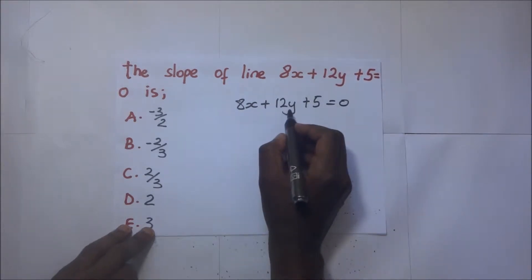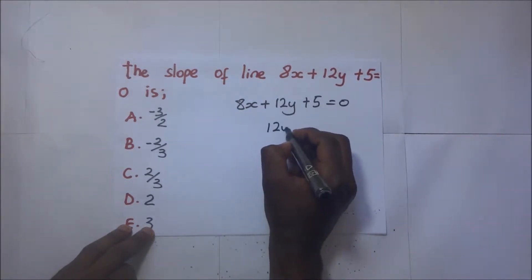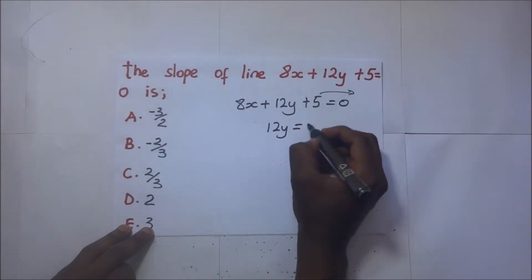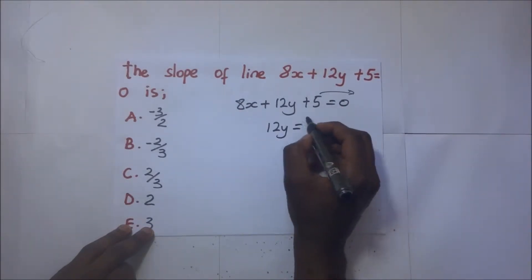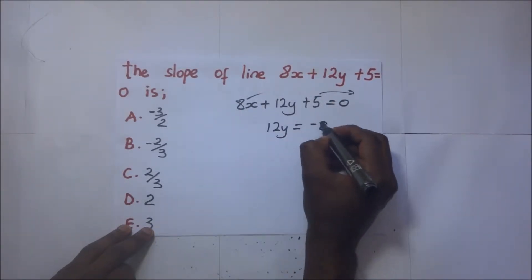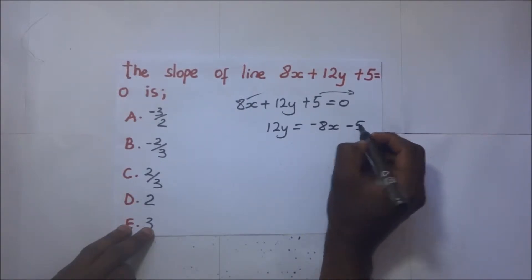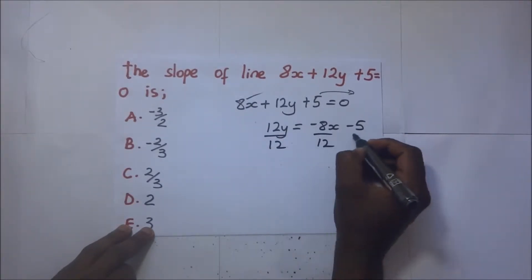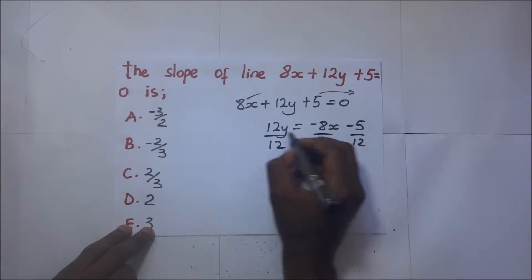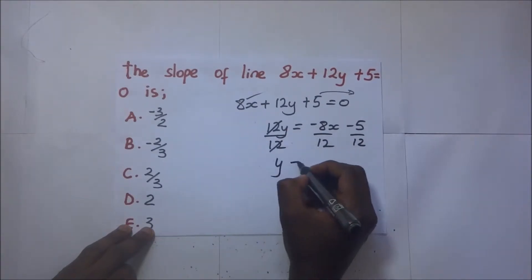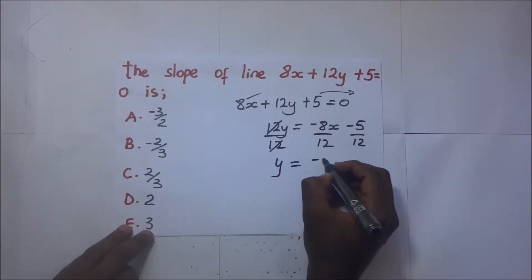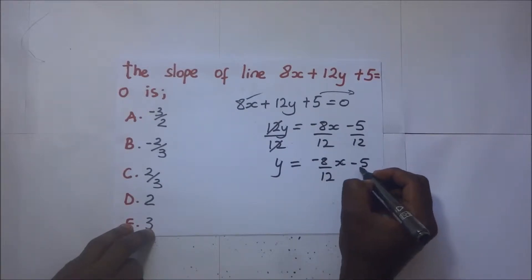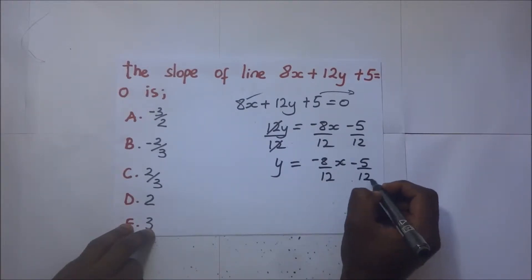We make y the subject of the formula. So 12y remains on one side, giving us 12y = negative 8x minus 5. Dividing both sides by 12, we remain with y = negative 8 over 12 times x minus 5 over 12.